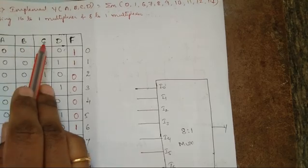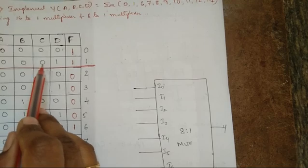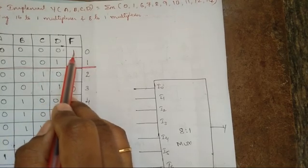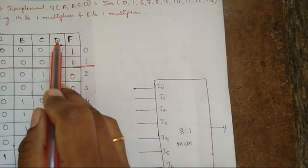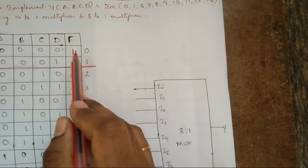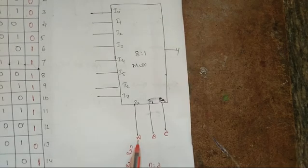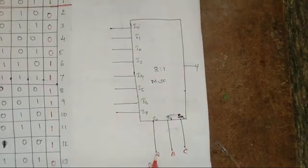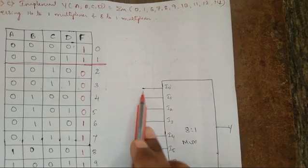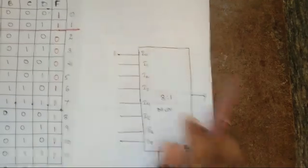When A=0, B=0, C=0 — we have two conditions. When D=0, output F is 1; when D=1, output F is also 1. Meaning, irrespective of the value of D, the output is always 1. So when the select line ABC = 000, input I0 will be selected. To get output 1, we must connect logic 1 to I0.